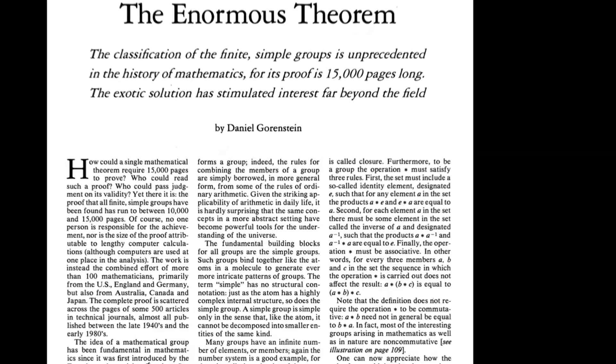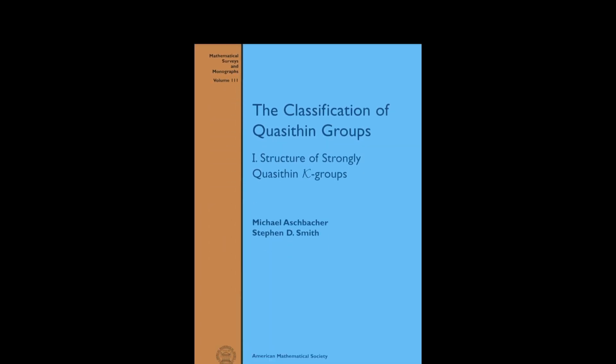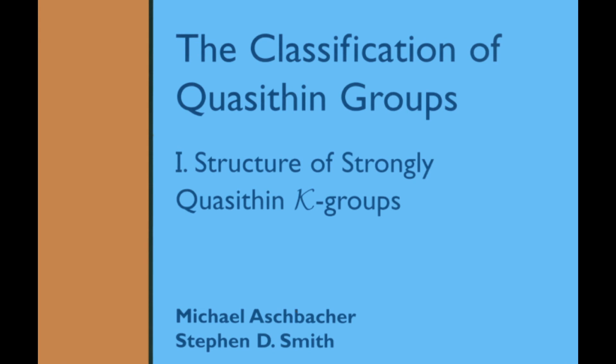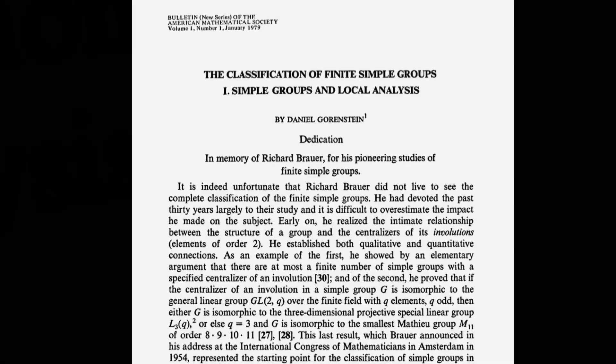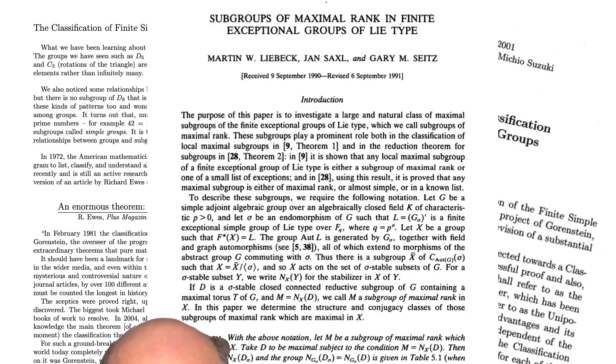Some will say that it was actually completed in the 1980s, when the Enormous Theorem came into existence — 15,000 pages of work. But actually, there were still significant gaps, which only finished to be filled in 2004, when the classification of quasi-thin groups came into existence. There were decades of work, nearly 100 mathematicians, and thousands of pages of work.